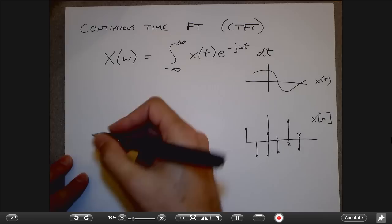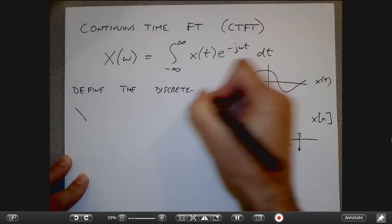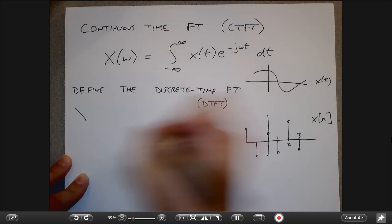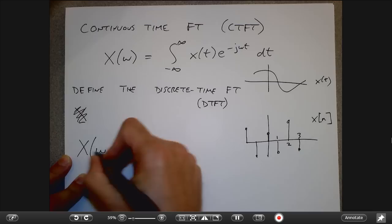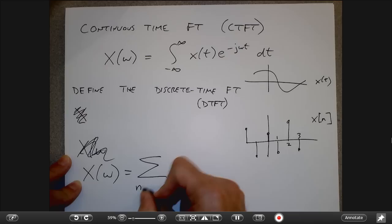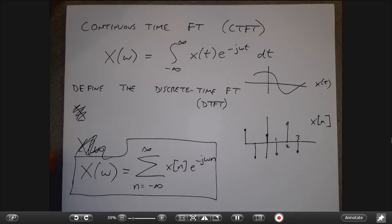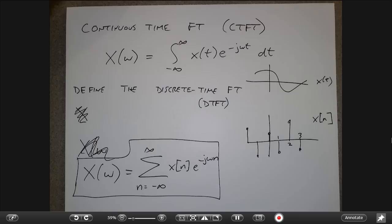That is in fact true. We can define the discrete time Fourier transform, or DTFT, as an infinite sum. There's no more dt because I've got a discrete time sum. This is still a continuous function of omega — I haven't made the frequency domain discrete. Right now that's still continuous.